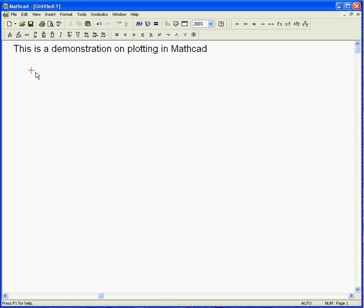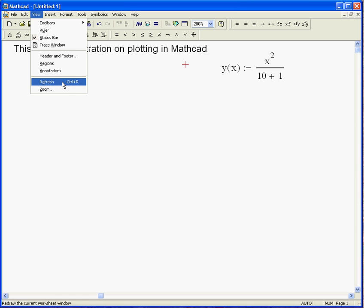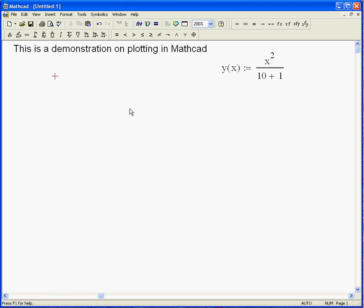Now the other way to do this is to tell it right up front that the keystrokes that follow are going to be a text comment. All you have to do is hit shift and the double quote, and you get a text box where you can type in anything you want. This is a demonstration on plotting in MathCAD. In MathCAD, all you have to do is define a function.